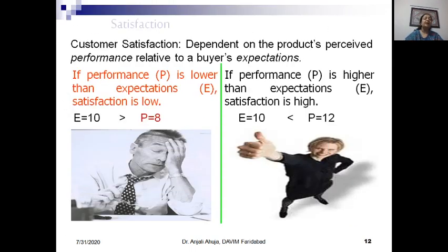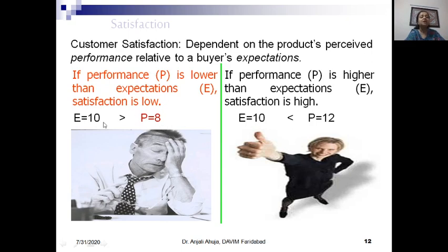How do we calculate satisfaction? Satisfaction is calculated through comparing our expectations with the actual performance of the product. Whenever we buy a product, we have certain expectations about how it will perform. If those expectations are met, we are satisfied; if not, we are dissatisfied. For example, if the expectation is 10 but the product performed only 8, the person will be dissatisfied. In another case, if the expectation was 10 and the performance was 10 or even 12, the customer is happy and satisfied.